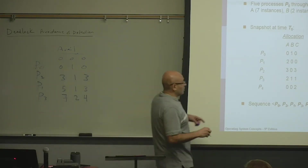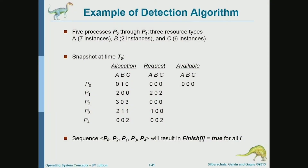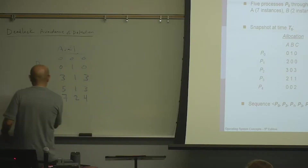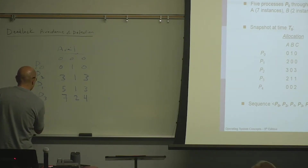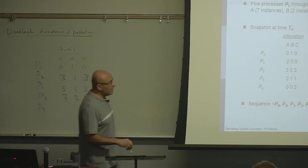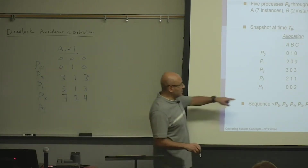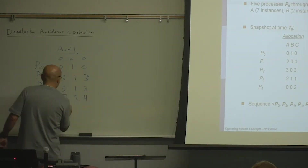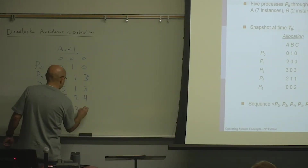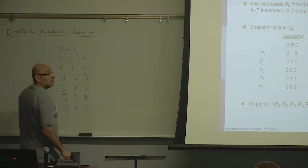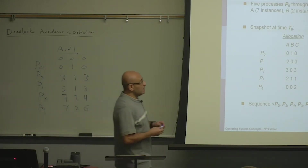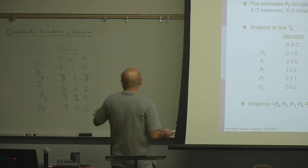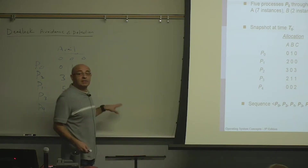Seven, two, four can definitely satisfy P4's request of zero, zero, two. So we put P4. After it's done, it's going to release two more instances of C. So we'll have seven, two, six. We found a safe sequence, which means that we don't have a deadlock.